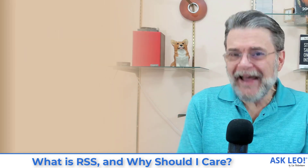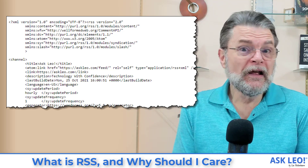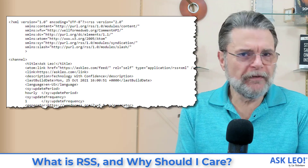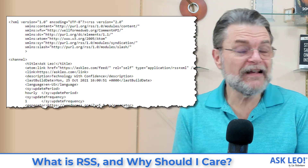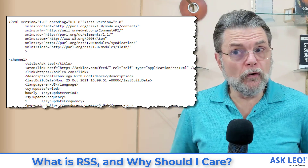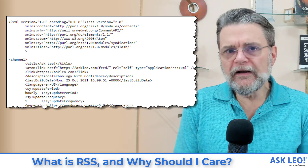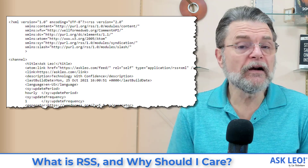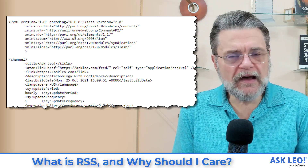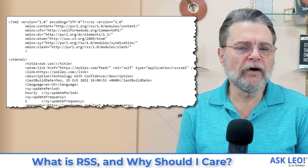If you take a look at that file, what results is a bunch of what probably looks like unintelligible gibberish. It is, in fact, a specially formatted file — it is in XML format, extensible markup language, customized to provide information in a structured way. What it includes is information about the channel — what they call the channel — or in this case, the site askleo.com.